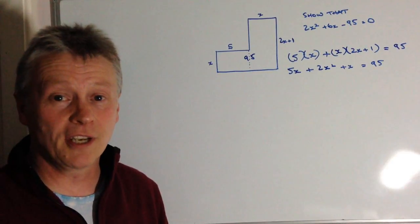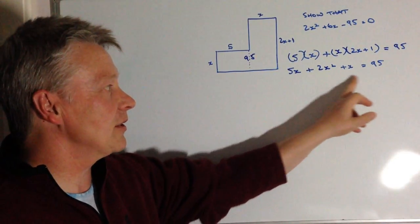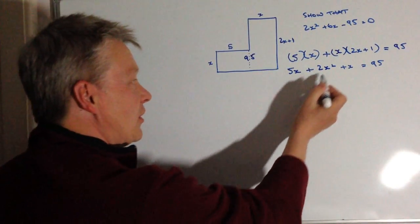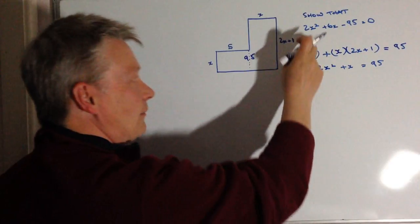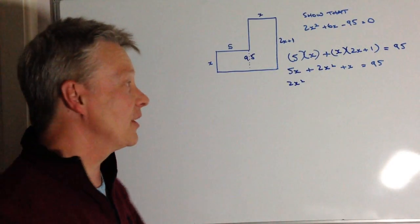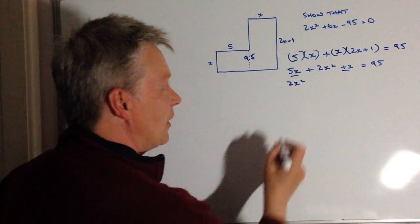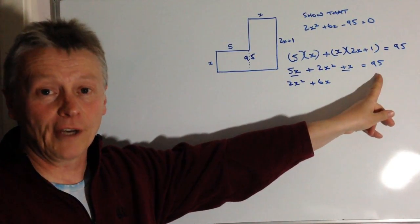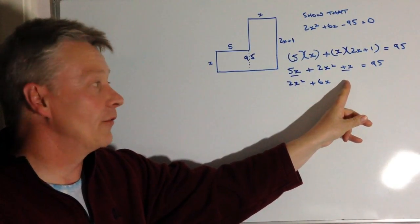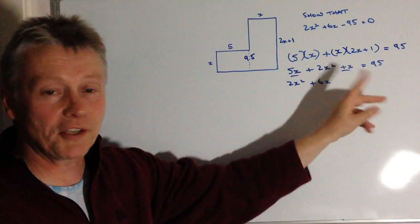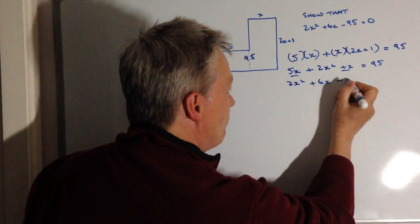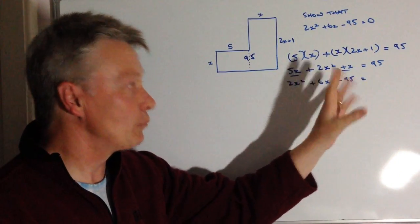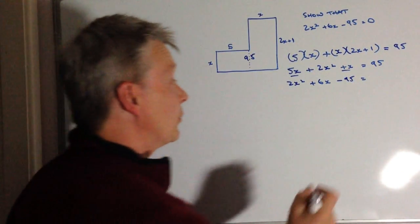Pretty much that's what we need to do. It's only a case now of just changing this around a little bit so it looks like that. So if I put the 2x squared at the beginning, that's fine. It looks the same as the question. And then I've got 5x plus x. Well, that's going to be plus 6x. And then rather than having the 95 over here, I'm going to bring it over to this side of the equal sign. So if I'm minus 95 from both sides, that would be minus 95 on this side. And on the right hand side, 95 minus 95 would equal 0.